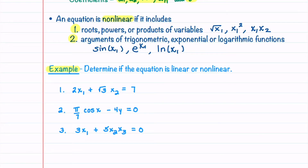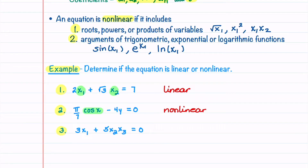Let's look at some examples and determine if these three equations are linear or nonlinear. In our first example, x1 and x2 are only raised to the first power, so this is a linear equation. In our second example, we have cosine of x, which makes it a nonlinear equation. In example 3, we have a product of variables x2 times x3, so that equation is also nonlinear. In this course, we're going to be working with linear equations.